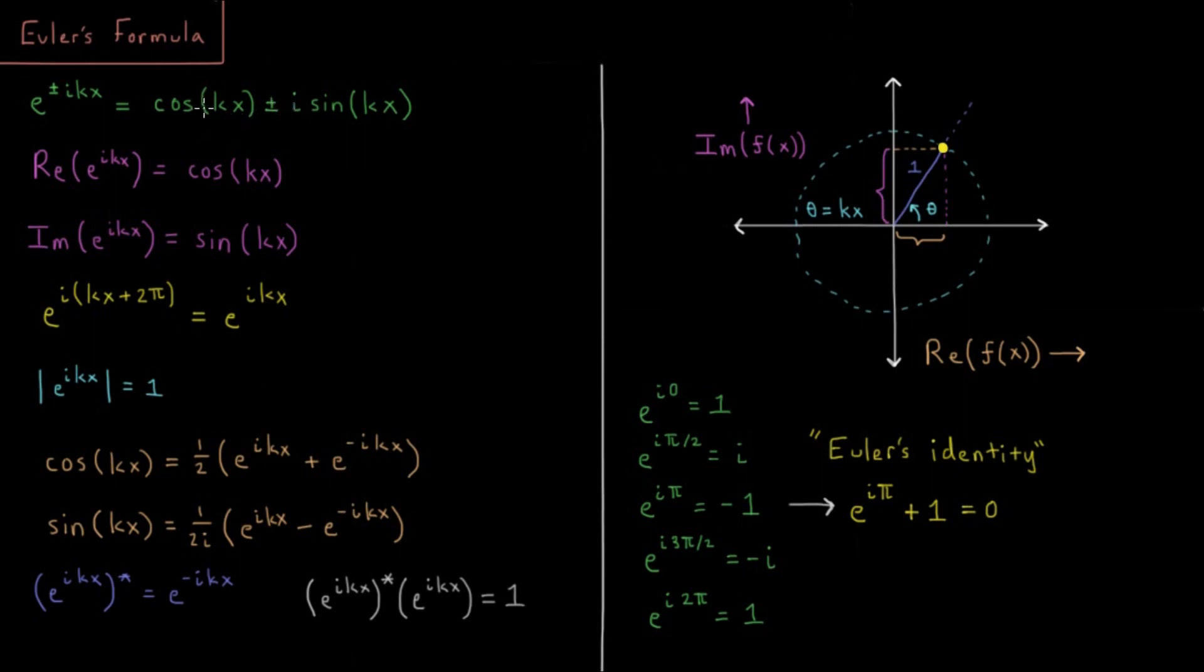So according to our video on complex numbers earlier in this playlist, this means that the real part of a complex exponential is equal to cos kx, and the imaginary part, the part we multiply times the square root of negative one, the imaginary part is equal to sine kx.